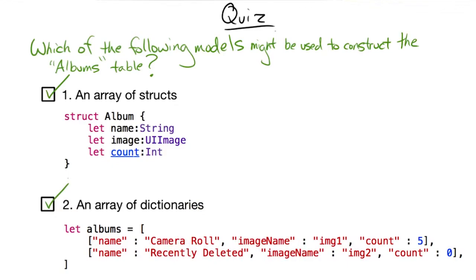Note that in both answers, there is an array of repeating data objects, and each data object can be used to build a single table view row.